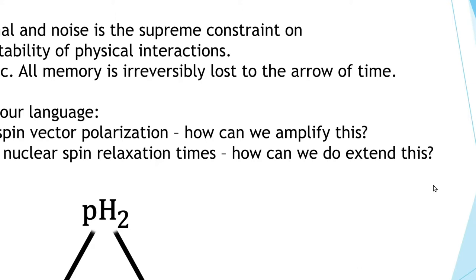There are some problems we have in all fields of physics — and I guess that's also how parahydrogen ended up everywhere. There are two fundamental issues: you have a supreme constraint on what physical interactions you can detect and exploit, and a lot of that has to do with signal-to-noise. The second thing is that the universe is entropic, and you're going to lose all your memory eventually.